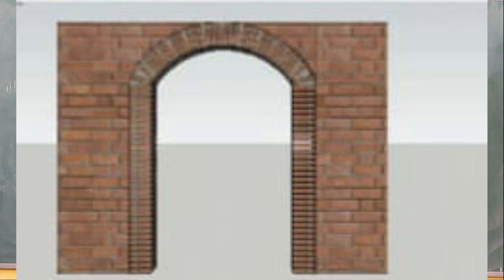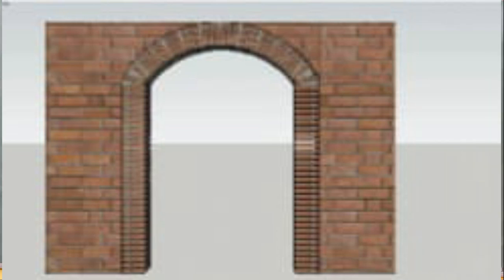The next type is the segmental arch — a circular arch that is less than 180 degrees. The segmental arch is one of the most durable types, capable of withstanding significant force or thrust. It was initially created by Romans and is commonly used in building residential windows and doors.